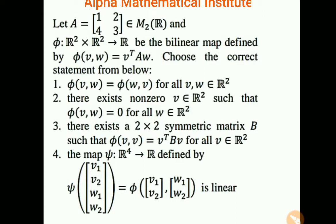Let A equal to a 2 by 2 matrix, first row 1, 2, second row 4, 3, belongs to M2 of R. And φ from R2 cross R2 to R be a bilinear map defined by φ of V comma W equals to V transpose AW. Choose the correct statement from below.